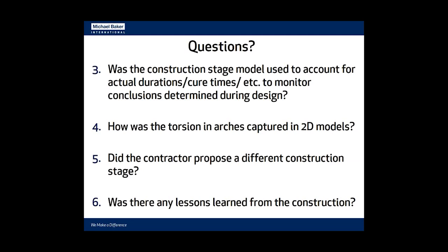Question: Did the contractor propose a different construction stage? Answer: They proposed to erect the bridge in the opposite direction from what we assumed for design. However, the overall idea of erecting the bridge on temporary towers was the same. Although the specifics of tower placement around the railroad tracks and direction differed slightly, the overall method of how the bridge was erected was similar to what we assumed in our modeling.